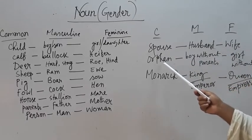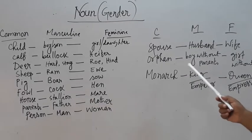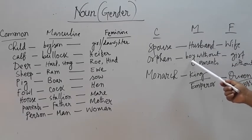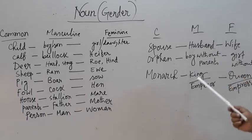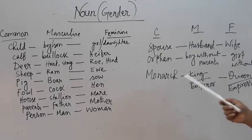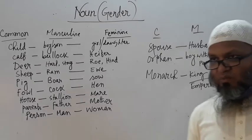And 'orphan' — the boy or girl who has no parents. Its male form is a boy without parents, and its female is a girl without parents. And 'monarch' — its masculine is king or emperor, and its feminine is queen or empress. Those are the words which will help you a lot.